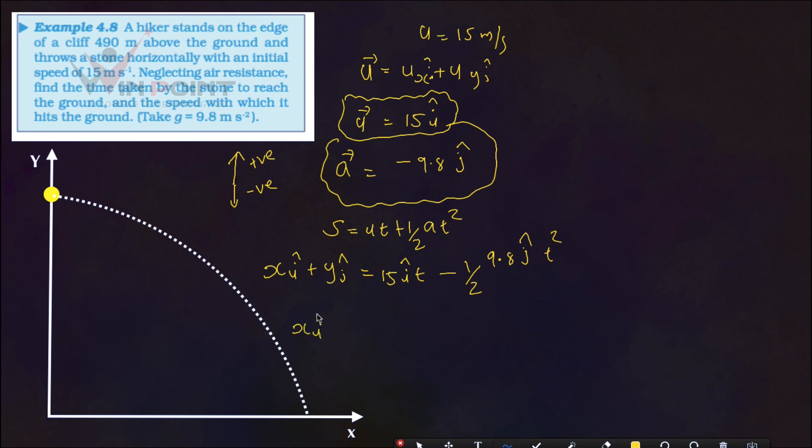I am going to write it properly in the form of vector. XI, YJ cap equals 15TI. Just 15IT, I am changing into 15TI. Minus, then after that we can write 9.8 T square by 2 into J. They have given one more thing. This YJ displacement. What is a displacement? It is 490 meters. That is the height of the cliff.